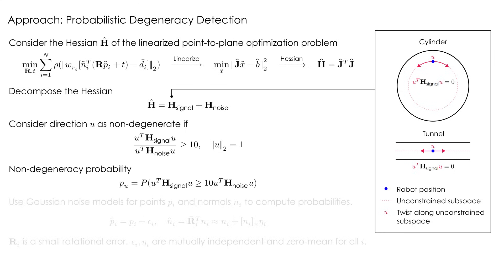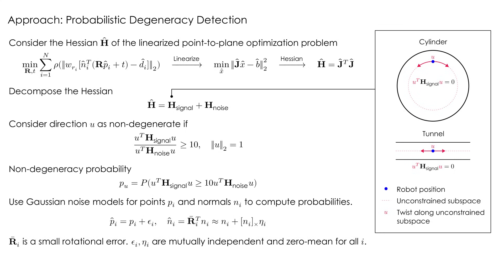P sub u quantifies the probability that direction u is non-degenerate. To compute non-degeneracy probabilities, we use Gaussian noise models for the points and normals used to construct the Hessian.